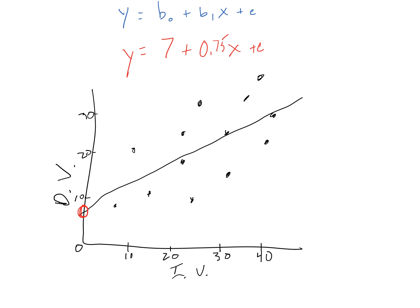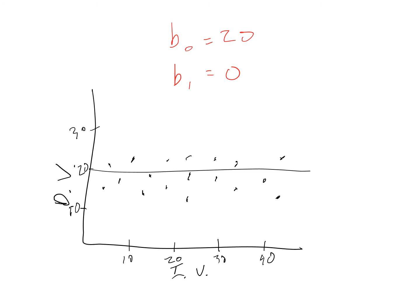The most relevant number is the slope. We would interpret this slope to mean that for every 1 unit increase in our independent variable, we would expect to see a 0.75 unit increase in our dependent variable. In this example, the best fit line has an intercept of approximately 20 and a slope of 0. In other words, for every 1 unit increase in the independent variable, there is no change in the dependent variable. This is similar to a correlation of 0, meaning there is no relationship between the independent and dependent variable.